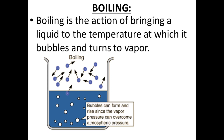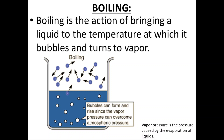Let's look at boiling. Boiling is the action of bringing a liquid to the temperature at which it bubbles and turns to vapor. In conjunction with this, we need to know what vapor pressure is. Vapor pressure is the pressure caused by the evaporation of liquids. Normally you have a heat source — a flame at the bottom of the container — and that fire causes greater vaporization to start to occur at the bottom surface of the liquid, so little bubbles are formed.